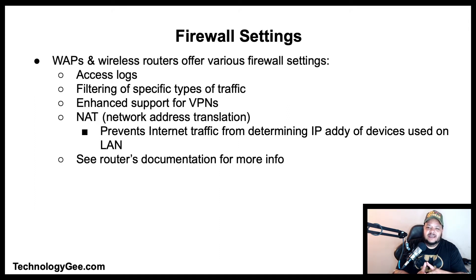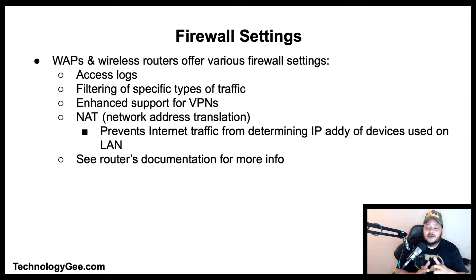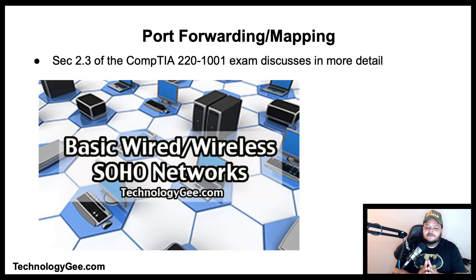Firewall settings: wireless access points and wireless routers offer firewall settings that include access logs, filtering of specific types of traffic, enhanced support for VPNs, and Network Address Translation (NAT), which prevents internet traffic from determining the private IP addresses of devices on the network. Refer to the router manufacturer's documentation for more information about other advanced security features.